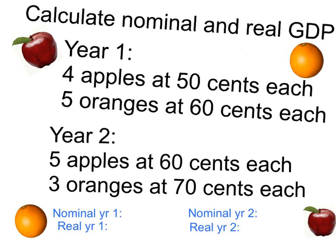So let me show you what I mean by that. Let's say we take a very simple economy here that only produces two products. As you can see here, we have four apples that we produce at 50 cents and five oranges at 60 cents. In year two, we have five apples that we're producing at 60 cents, the price went up a little bit, and three oranges at 70 cents.